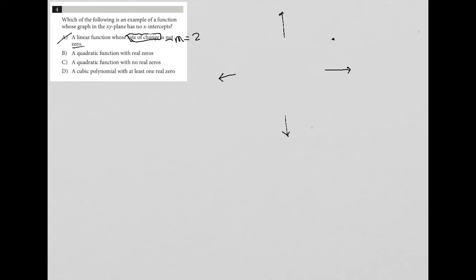For B, a quadratic function with real zeros. Well, what does that mean? Real zeros is code for X intercepts. So keep that in mind. So obviously, if a graph has X intercepts, that means it cannot be the right answer because we're looking for an answer that has no X intercepts.